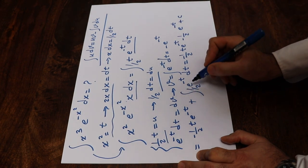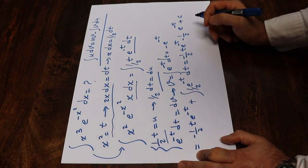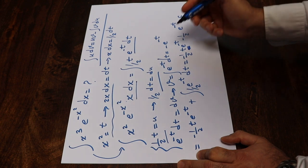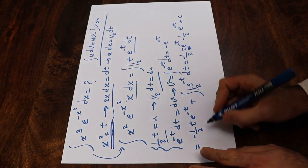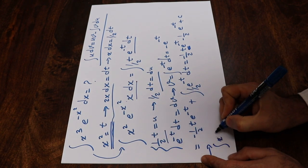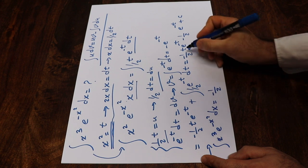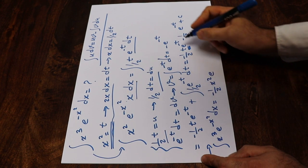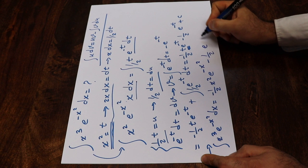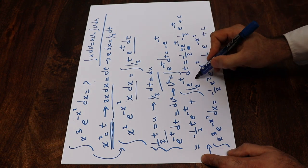If it's not clear how to calculate the integral of e^(−t) dt, just write in the comment section and I will explain. Now all you need to do is substitute back t = x². Therefore the integral of x³·e^(−x²) dx equals minus (1/2)·x²·e^(−x²) minus (1/2)·e^(−x²) plus C.